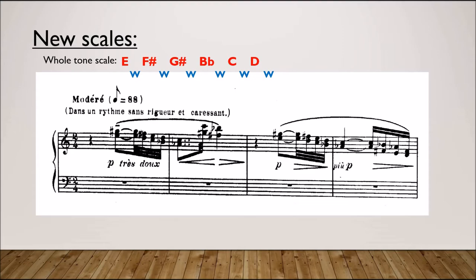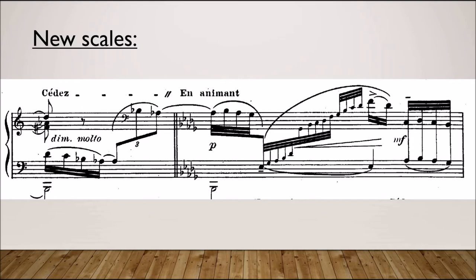Later in this same piece is another example of a different type of scale that avoids those half steps. Starting at this glissando figure, let's do a note count. There is an E-flat, G-flat, A-flat, B-flat, and D-flat. And those are the only five notes from here onward.